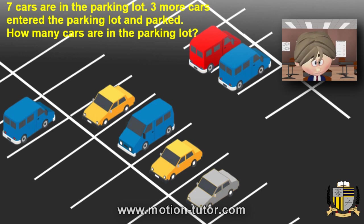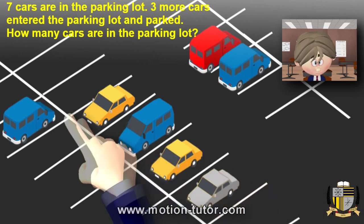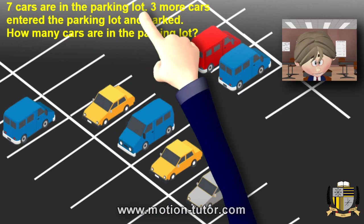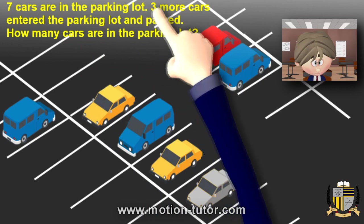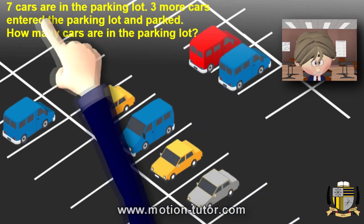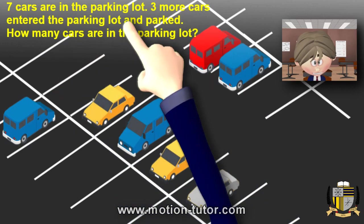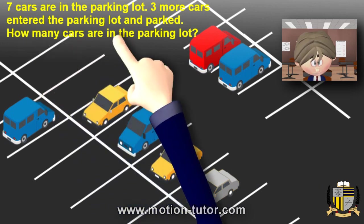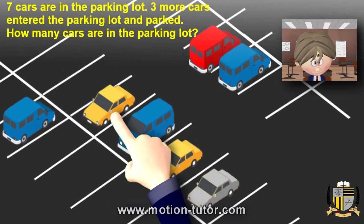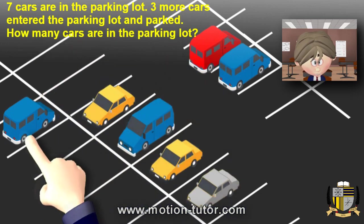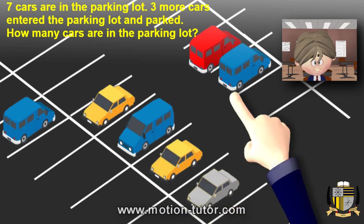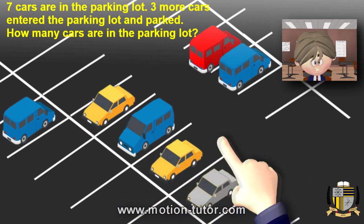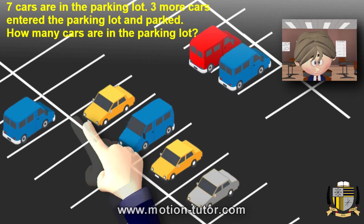Let's look at this final example. Seven cars are in the parking lot. Three more cars enter the parking lot and park. How many cars are in the parking lot? We see one, two, three, four, five, six, seven cars — there are seven cars in this parking lot.